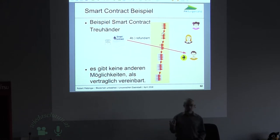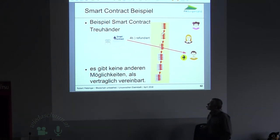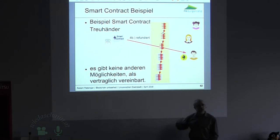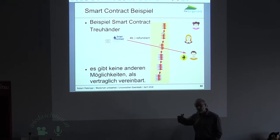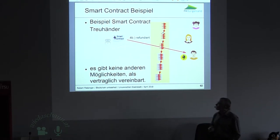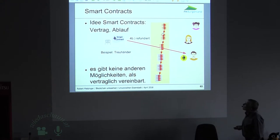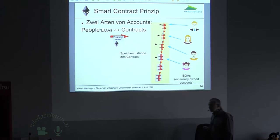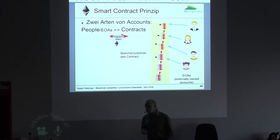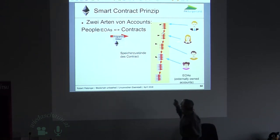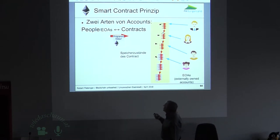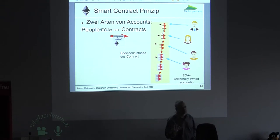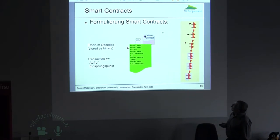Derjenige, der den Smart Contract geschrieben hat, hat festgelegt, dass das Geschäft so ablaufen soll, und damit steht das für alle sichtbar drinnen. Die Regel der Ethereum-Chain lautet: Code is Law. Wir haben also zwei verschiedene Arten von Teilnehmern auf der Chain: Das eine sind Leute — man nennt das externally owned accounts — und das andere sind Smart Contracts, also Robots, die da teilnehmen.